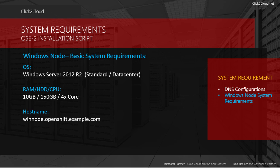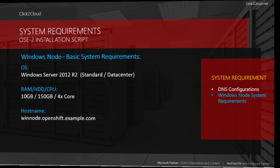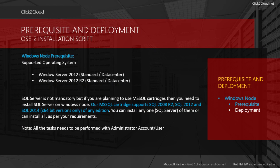The displayed configuration is not the minimum requirement. The prerequisites for Windows Node deployment are displayed. The supported operating systems are Windows Server 2012 and Windows Server 2012 R2. If you are planning to use MSSQL cartridges, then you need to install SQL Server on Windows Node; otherwise SQL Server is not mandatory. Our MSSQL cartridge supports 64-bit versions of SQL 2008 R2, SQL 2012, and SQL 2014.